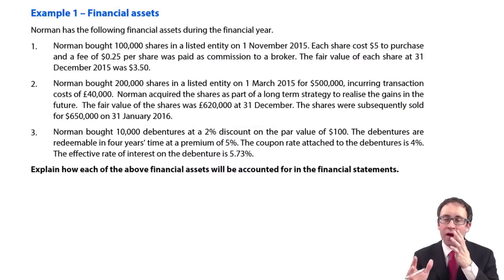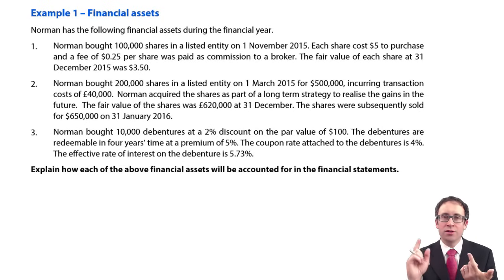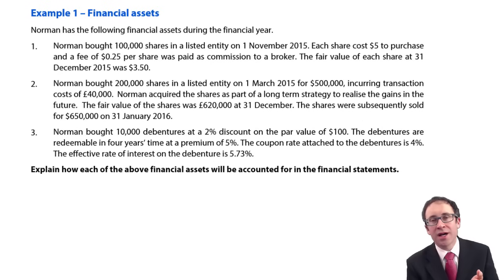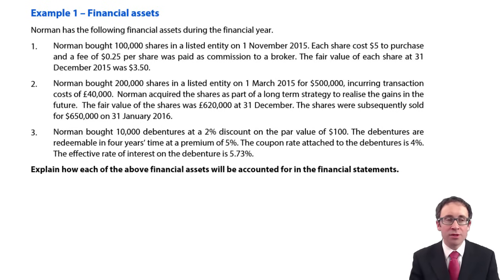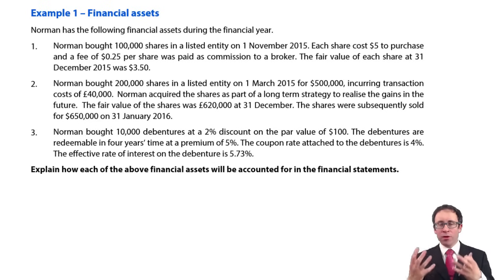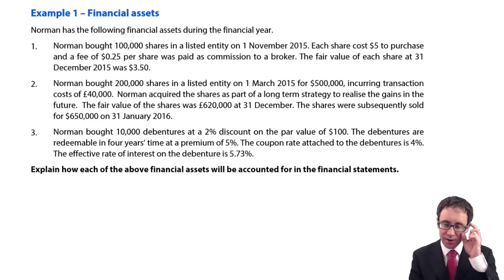You've taken a lot in there in terms of your initial measurements, your classification as fair value through profit or loss, fair value through other comprehensive income, amortised cost, as well as thinking about subsequent measurements and a little bit of de-recognition as well. I told you it was going to be a tough chapter, so let's try and help you out by working the example we have here on financial assets.